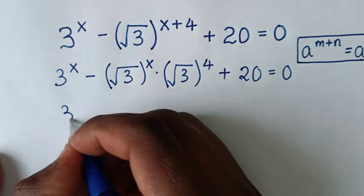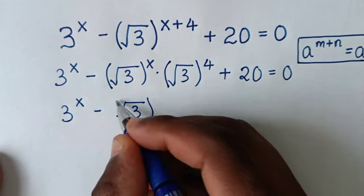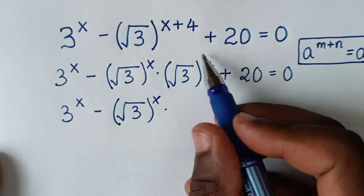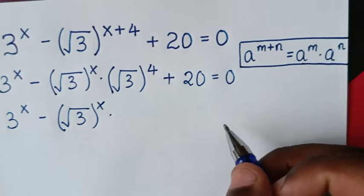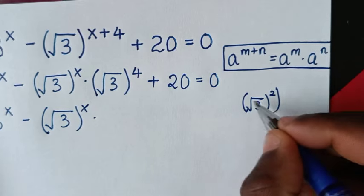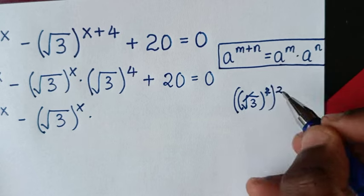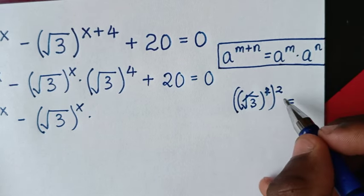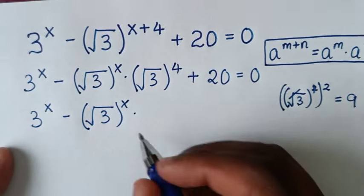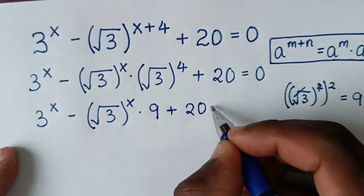In the next step, it will be 3^x minus √3^x times √3^4. Now, √3^4 is the same as (√3)² squared, so the square root cancels the square, giving 3², which is 9. So this becomes 9, then plus 20 is equal to 0.